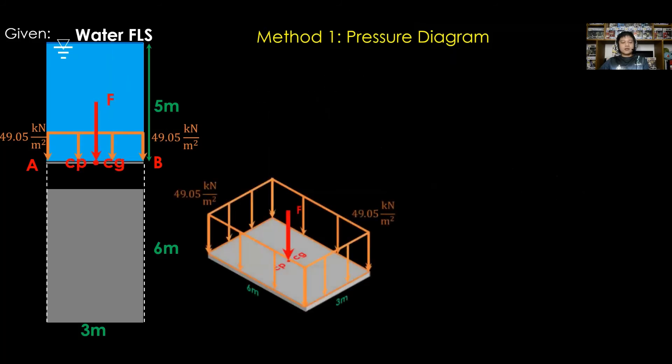Next, determine the value of force F. For F, it is equal to the volume of pressure diagram, or area of the submerged surface times the height or intensity of the pressure diagram.